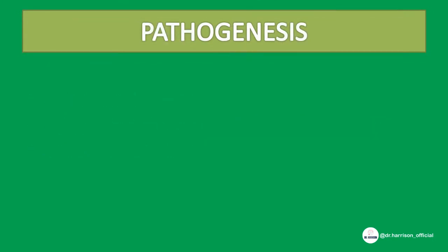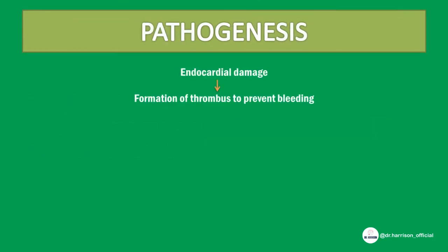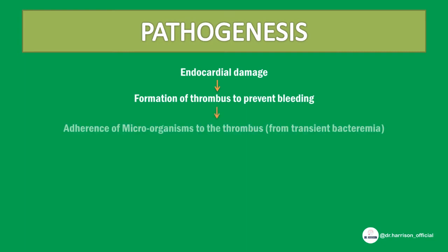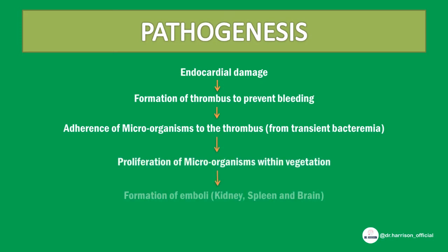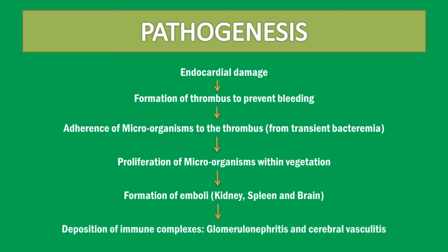Pathogenesis of infective endocarditis: endocardial damage results in formation of a thrombus to prevent bleeding. Due to transient bacteremia, microorganisms adhere to the thrombus plug and start proliferating. The thrombus gradually detaches and results in formation of emboli, which may lodge in the kidney, spleen, or meninges. Deposition of immune complexes causes glomerulonephritis and cerebral vasculitis.